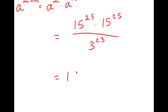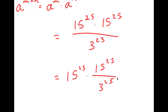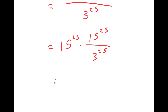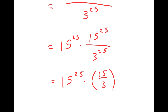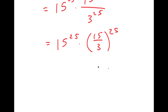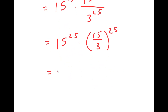This is equal to 15 to the power of 25 times 15 to the power of 25 over 3 to the power of 25, which is equal to 15 to the power of 25 times 15 over 3 to the power of 25. And this is equal to 15 to the power of 25 times 5 to the power of 25.